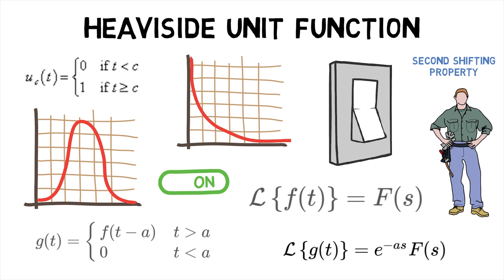So, whatever the value is subtracted from t in the on switch part of g(t), it is simply multiplied by minus s in the power of e.